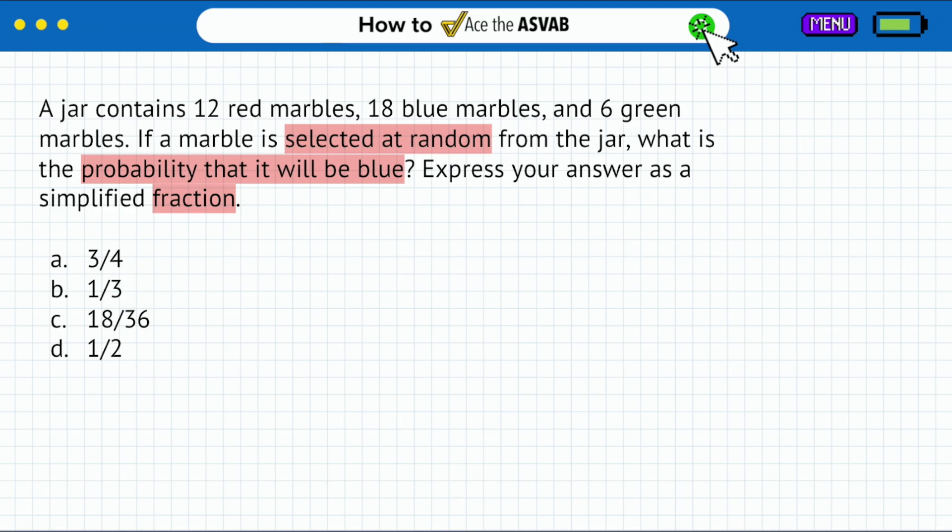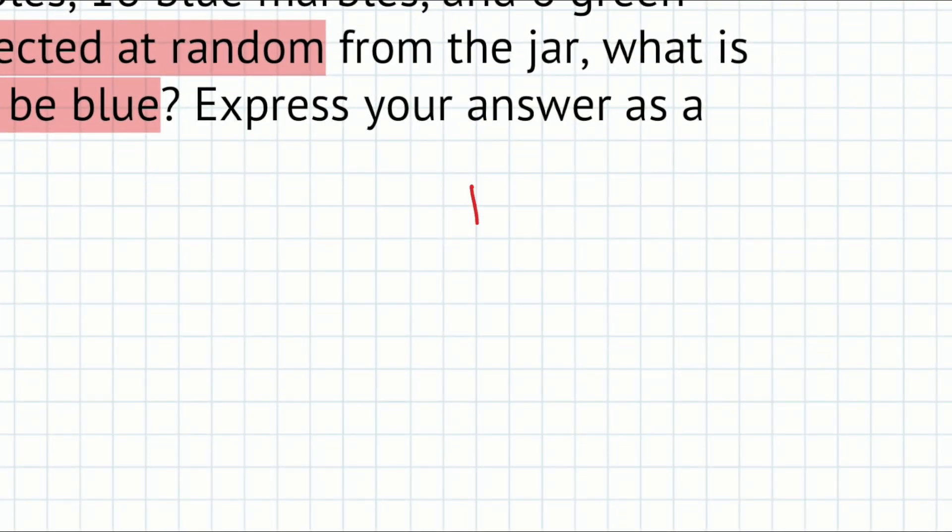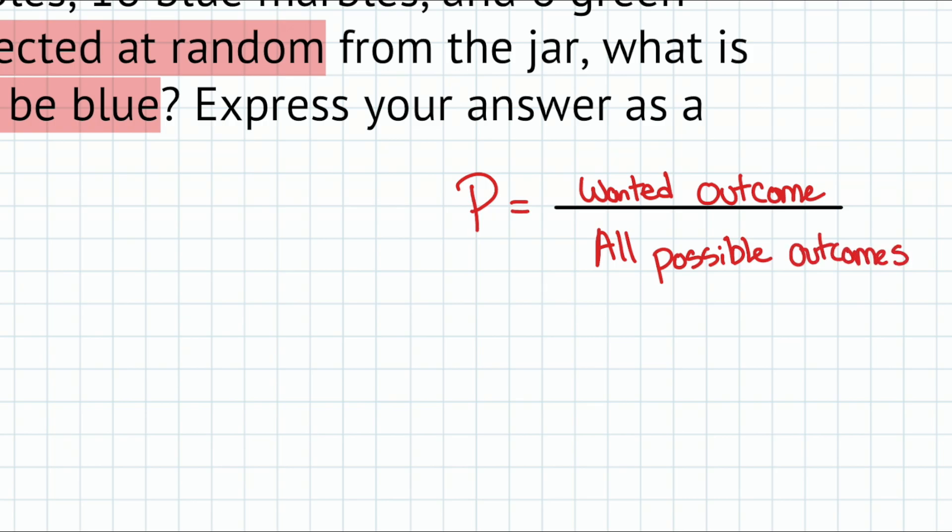Whenever you see probability problems, they have to tell you that it's probability. They can use 'what's the probability' or 'what are the chances,' maybe even 'what are the odds.' So it's going to be pretty obvious when you're dealing with probability. The great thing is there's a formula. Let's zoom on in. The formula for probability is: probability equals the wanted outcome divided by all possible outcomes.